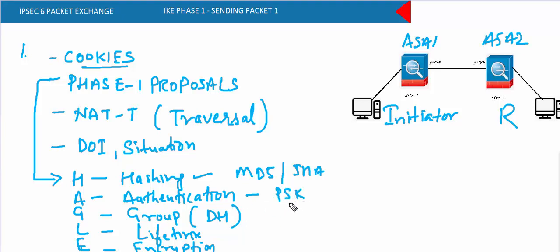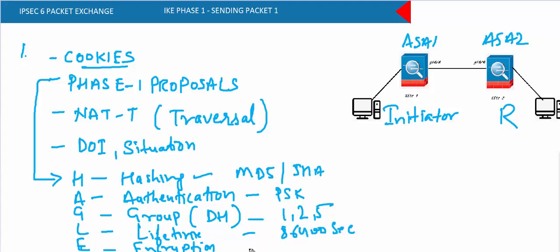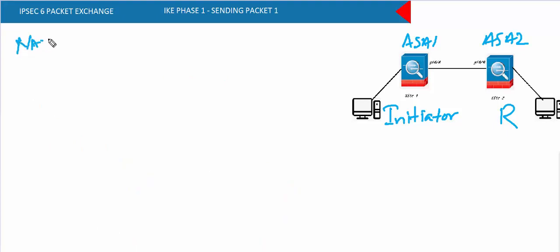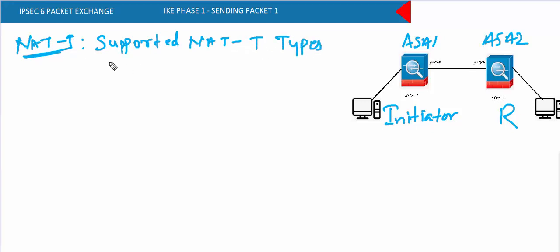For authentication we will be using pre-shared key (PSK) based authentication — we're just defining the authentication method. The Diffie-Hellman group: groups 1, 2, and 5 are supported for IKEv1. Lifetime is in seconds; if you do not specify a lifetime, the ASA defaults to 86,400 seconds.